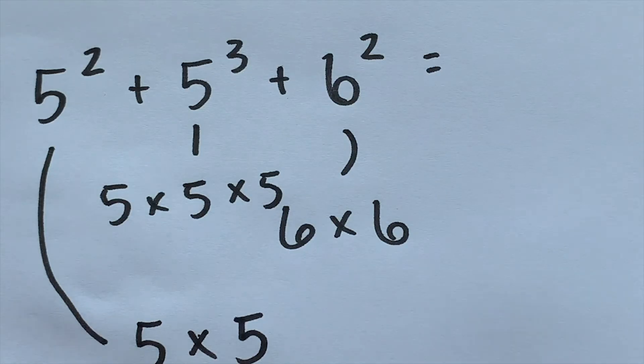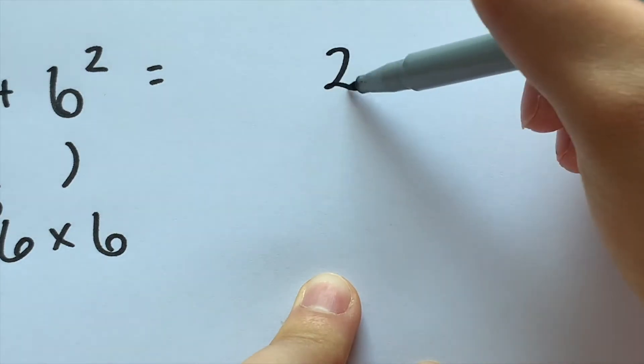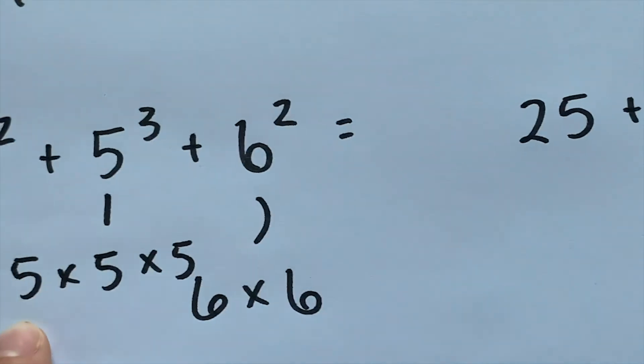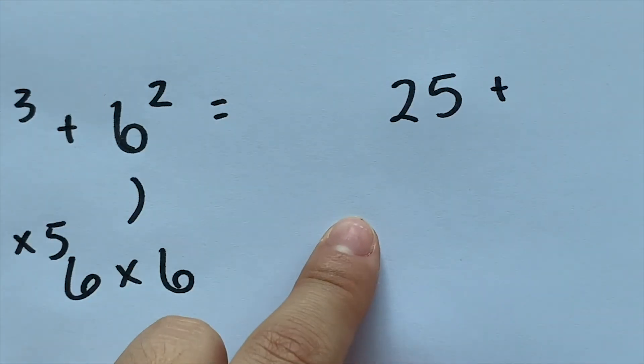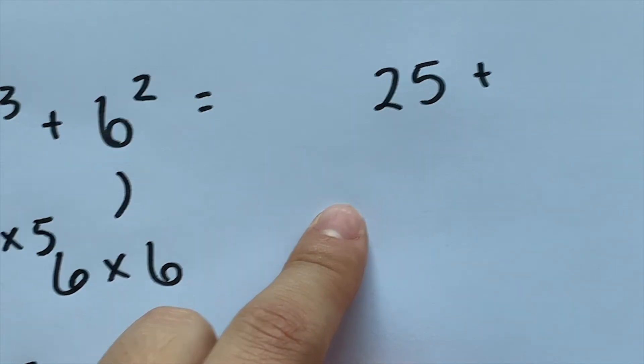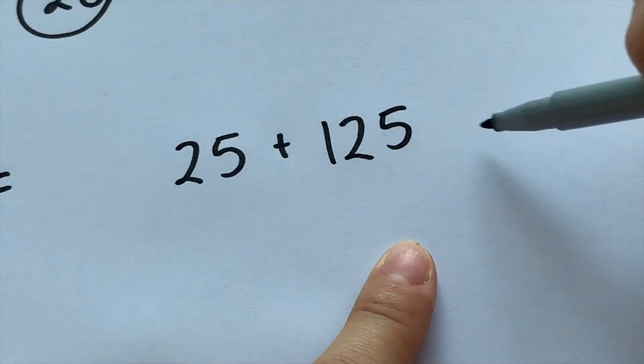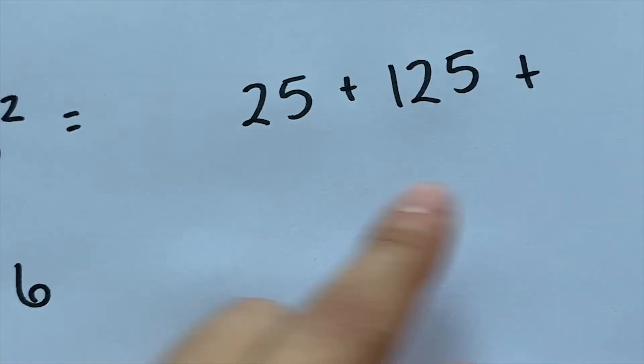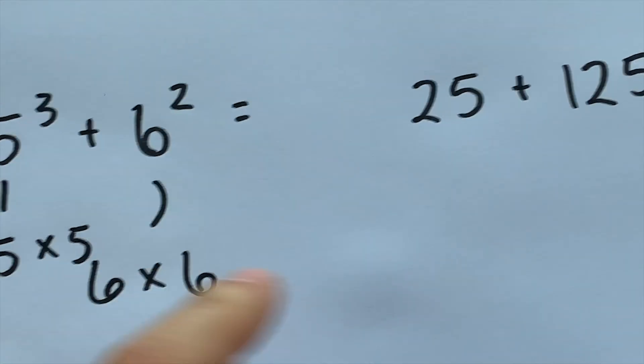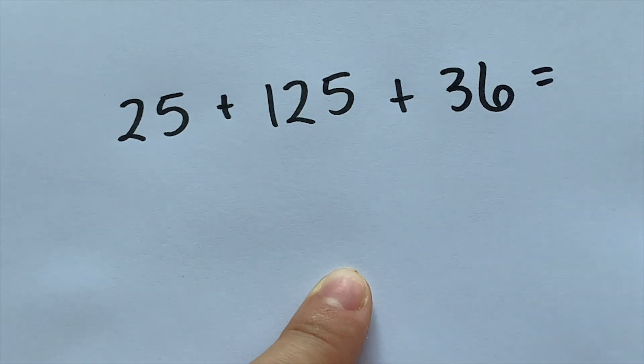So I'm actually going to scoot over here and write it down for you here. So our first one equals twenty-five. So then we have our third one, which is five times five times five, three times. So that gives us one hundred twenty-five. That's a bigger number. And then we're adding our third one here, which is six times six because we have an exponent of two, which gives us thirty-six, which equals to one hundred eighty-six.